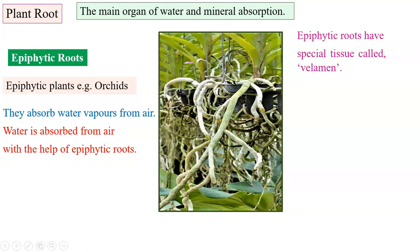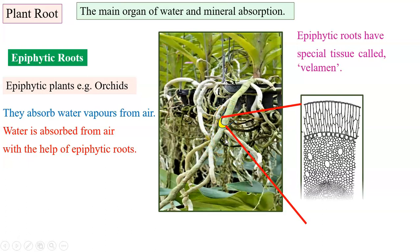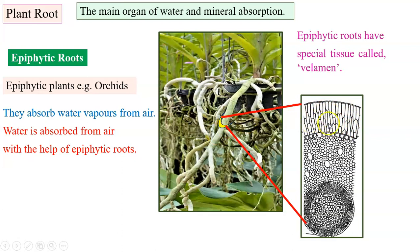The epiphytic roots have special tissues called velamen. If we take cross section of this epiphytic root, we can see on the outer surface there are present cells in many layers which are hygroscopic. They have great attraction for water molecules and these are velamen tissues.